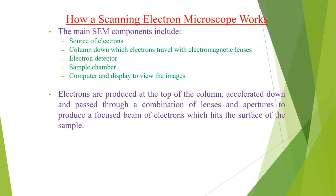Here we will start about how a scanning electron microscope works. The main SEM components include a source of electrons, a column down which electrons travel with electromagnetic lenses, electron detectors, and sample chambers. A computer and display to view the image is also required. Electrons are produced at the top of the column and accelerated down, passing through a combination of lenses and apertures to produce a focused beam of electrons.